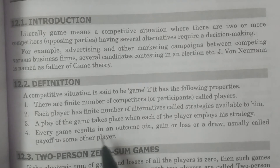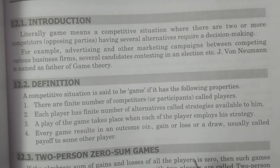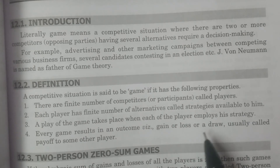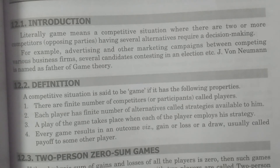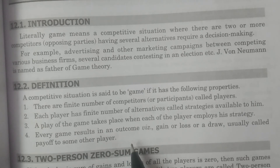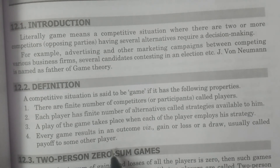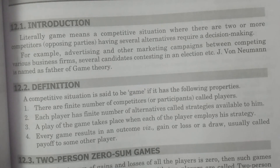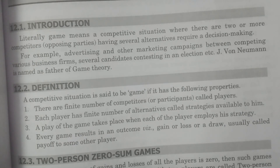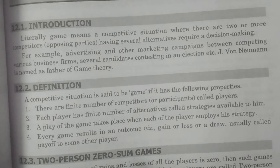Third, a play of the game takes place when each of the players employs their strategy — uses their particular strategy. Then the game is said to have taken place. Fourth, every game results in an outcome. For every game, it must have a particular outcome — a gain, loss, or a draw — usually called a payoff, which means some amount is paid from one player to the other. The player who loses is supposed to pay a particular amount to the other player; that is called a payoff.